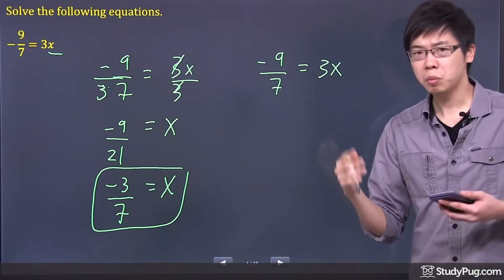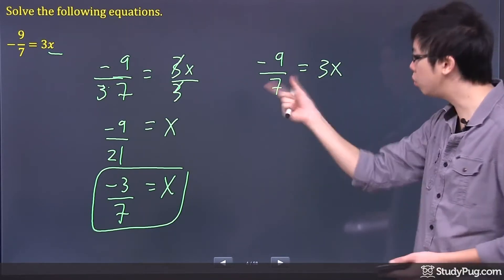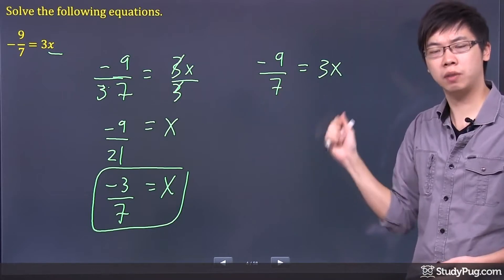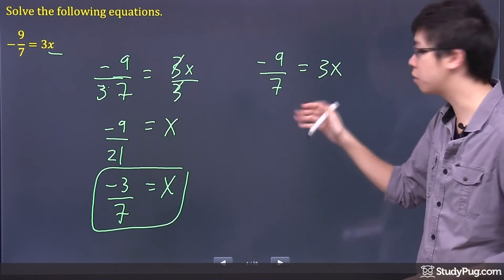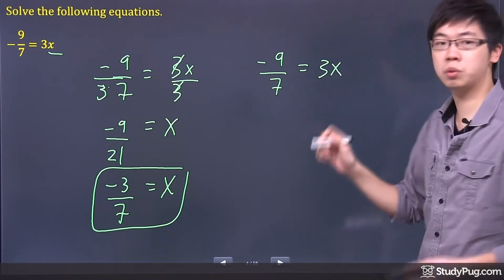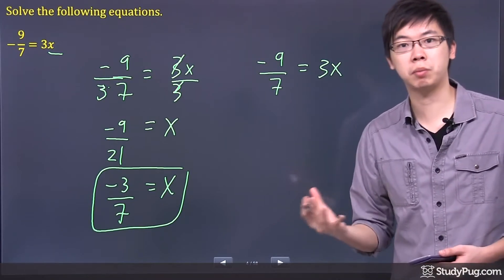So if you have two fractions, it doesn't have to be fractions. It's two different terms on either side of the equation, which is the equal sign here. What you can do is actually do something that's called cross-multiplying.